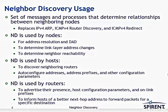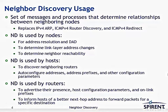The usage of Neighbor Discovery is a set of messages and processes that determine the relationship between neighboring nodes. It replaces IPv4 ARP, ICMP version 4 Router Discovery, and ICMP version 4 Redirect. Neighbor Discovery is used by nodes — whether a host or a router — for duplicate address detection, to determine link layer address changes, and to determine neighbor reachability. It is used specifically by hosts to discover neighboring routers and use that information for auto configuration of its address, to assign its prefix and other configuration parameters.